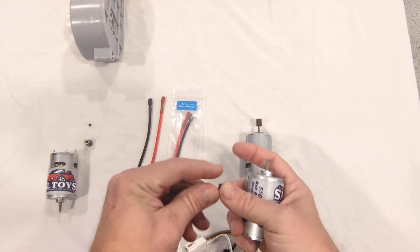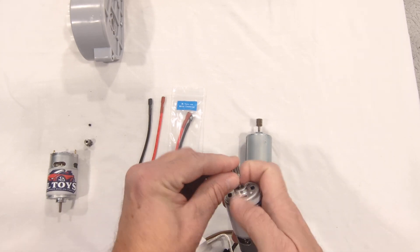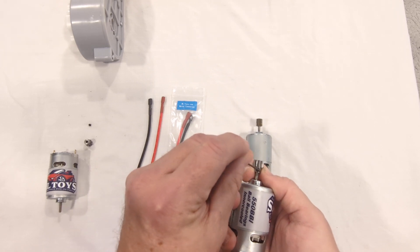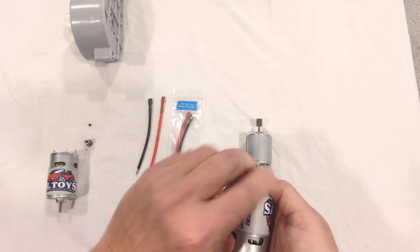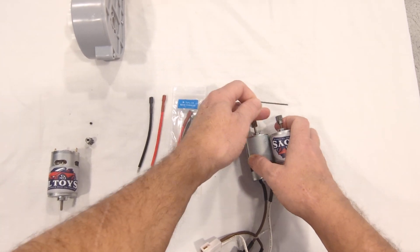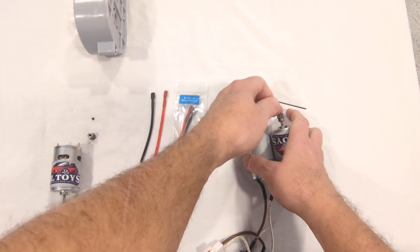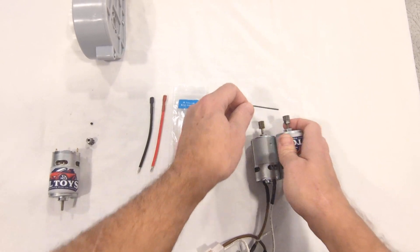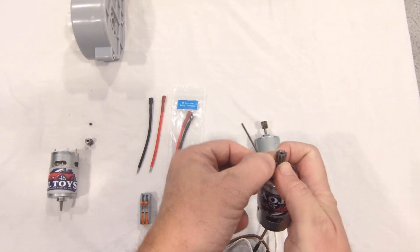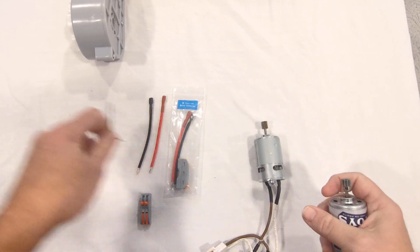We recommend using thread lock on these set screws. Put it on the shaft. You want to hit the flat spot on the shaft with the set screw, so it gets a good firm locking, and line it up so that it is about the same distance out as the stock one is. And then just hand snug it down, and you're done.